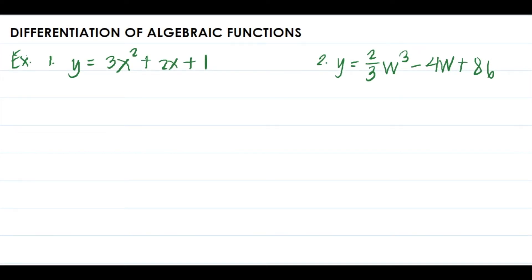Differentiation of algebraic functions. Differentiation is the process of obtaining the derivative or differential of a given function. We have several rules for finding derivatives: first is the derivative of a constant, wherein the derivative of a constant is equal to zero; next is the derivative of a power; third is the derivative of a constant times a function.